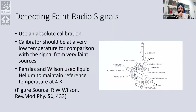Because they wanted a very good estimate of the RMS and as low an RMS as possible, they decided to use an absolute calibration — meaning they were not looking for a comparison source in the sky. Had they done so, they would have never discovered the CMBR. They were lucky that they were using an absolute calibration. A calibrator has to be at a very low temperature if you want to compare with a signal from very faint sources. Penzias and Wilson used liquid helium to maintain a reference temperature at around 4 Kelvin.